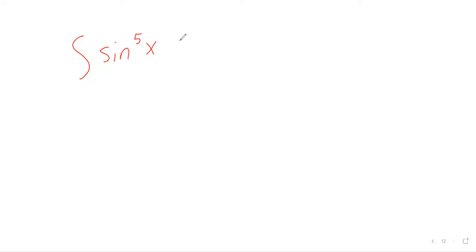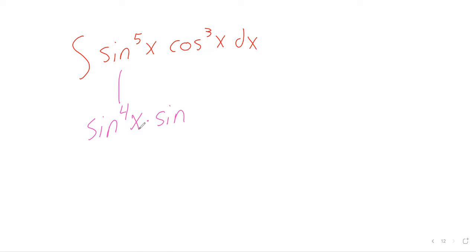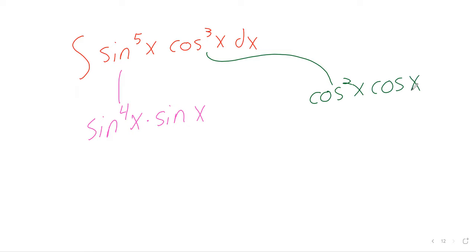If you have multiple odd powers, then you just get to make a choice. If you have sine to the fifth of x times cosine to the third of x dx, you're going to either pull out a sine — writing this as sine fourth times sine and then proceeding — or you're going to pull out the cosine, writing this as cosine squared times cosine and proceeding. Either works.